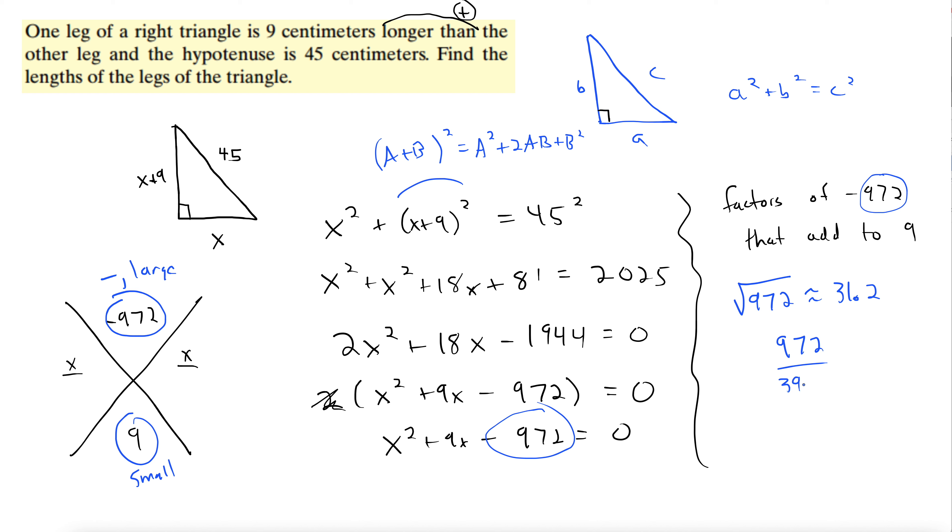So maybe you try 32. Well, that's not a factor of 972. We divide 972 by it. Maybe we try 31. That doesn't work either. But we know we're close because, unless it doesn't factor, which it could be the case. Turns out if you go down to 27, you just have to try a few to try to get something to factor. You get something. 972 divided by 27 is 36, which does the trick. Because we can subtract 27 from 36 to get 9.